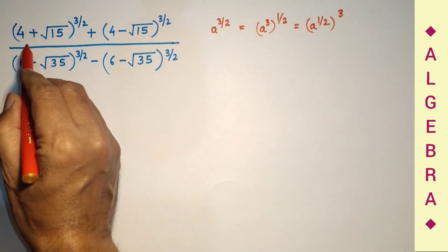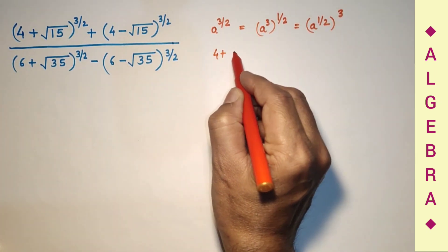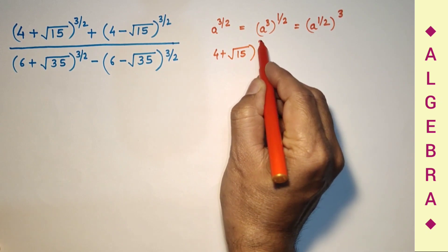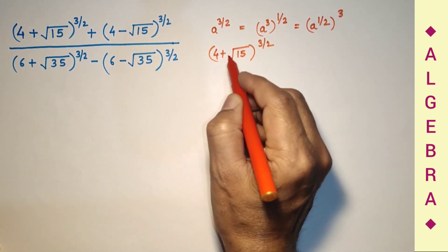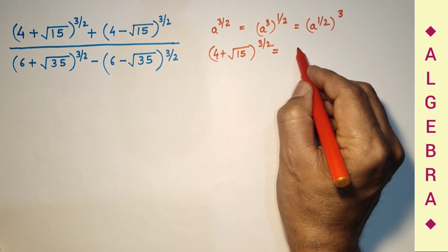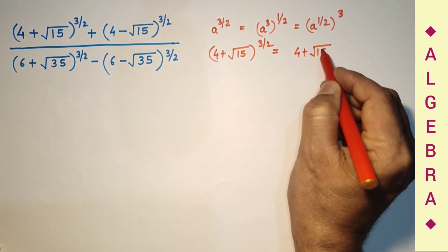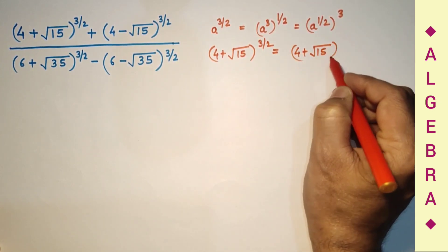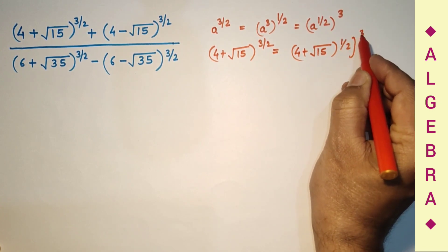If we write (4 plus square root of 15) raised to the power 3/2 in this way: (4 plus square root of 15) raised to the power half, and then that result raised to the power 3, so we need the square root of (4 plus root 15).